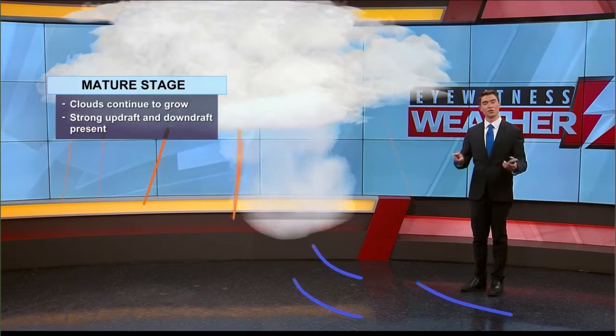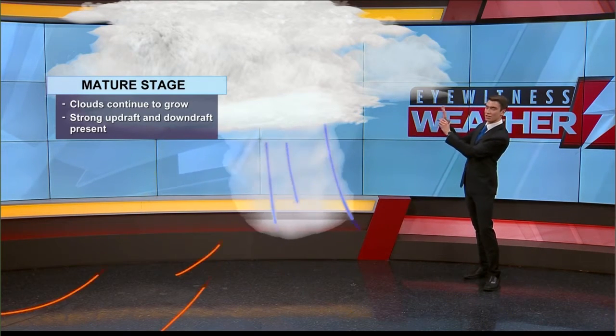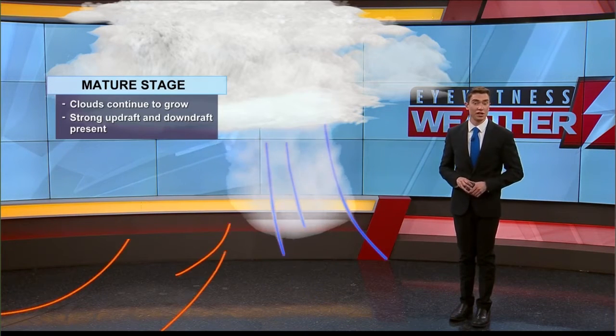Now we need those clouds to continue to rise, and for that we need two things: an updraft and also a downdraft. That updraft is the warm, moist air that continues to rise into the clouds, helping them keep growing. You often hear the name cumulonimbus cloud — those clouds deepen within this stage.